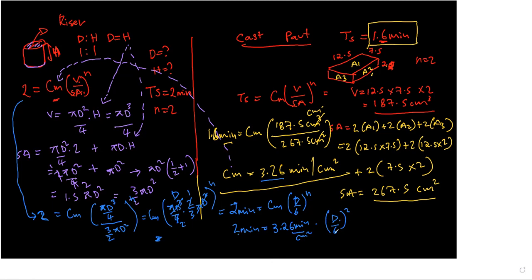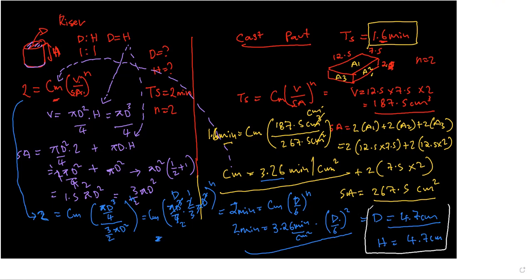Solving 2 = 3.26 × (d/6)^2, the diameter comes out to approximately 4.699, which we round to 4.7 centimeters. Since the diameter-to-height ratio is one-to-one, the height is also 4.7 centimeters. So the final dimensions of the riser are diameter = height = 4.7 cm. This is the solution to question three in the week five tutorial. For any questions, post to the forum or email me.